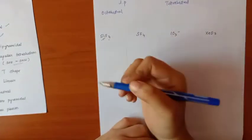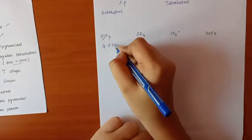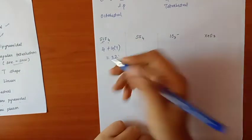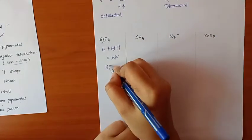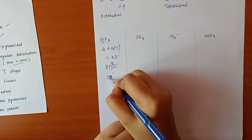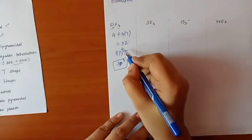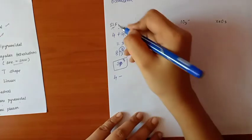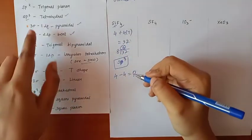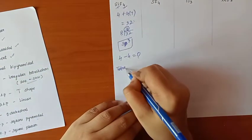SiF4: silicon has 4 valence electrons, plus 4 times fluorine (7) = 28, total = 32. Since 32 is greater than 8, divide by 8 to get 4, which means SP3. Lone pairs = 4 minus 4 surrounding atoms = 0. SP3 with 0 lone pairs is tetrahedral structure.